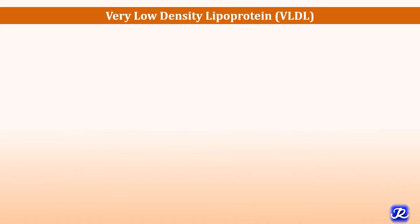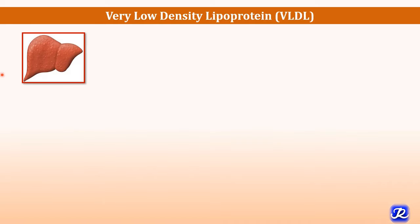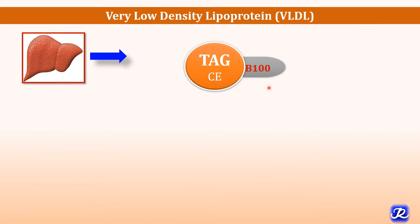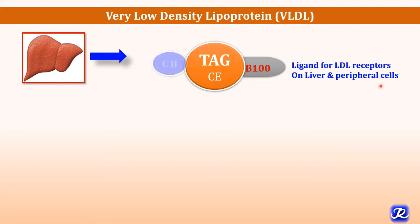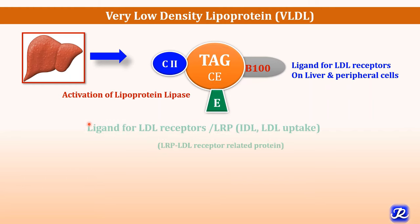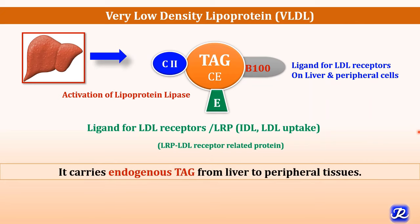Very low density lipoprotein (VLDL) is synthesized in the liver. It consists of apoprotein ApoB100, which acts as a ligand for LDL receptors on liver and peripheral cells; ApoC2, which activates lipoprotein lipase; and ApoE, which is a ligand for LDL receptors and LRP, required for IDL and LDL uptake by the liver. The function of VLDL is to carry endogenous triacylglycerol from the liver to peripheral tissues such as skeletal muscle and adipose tissue.